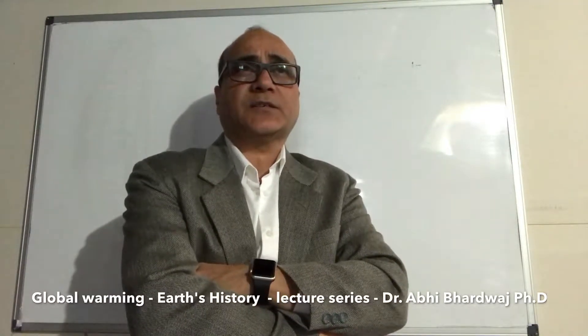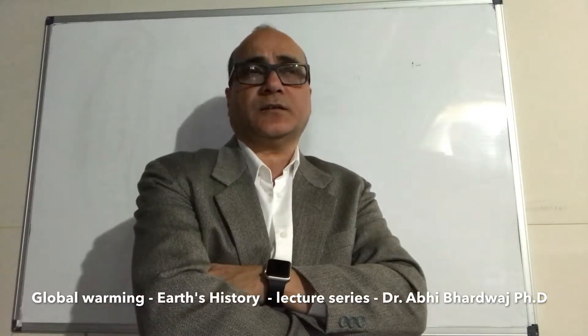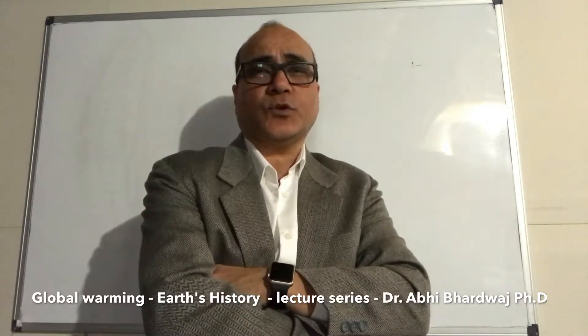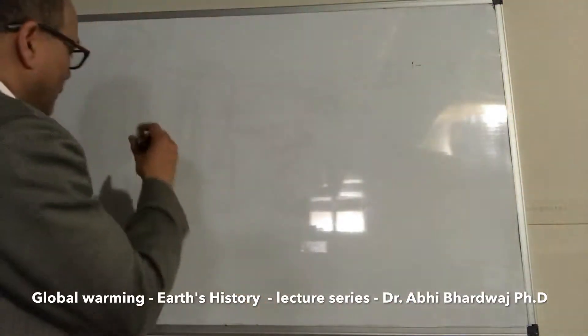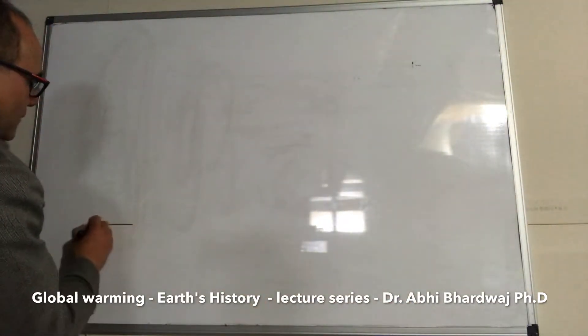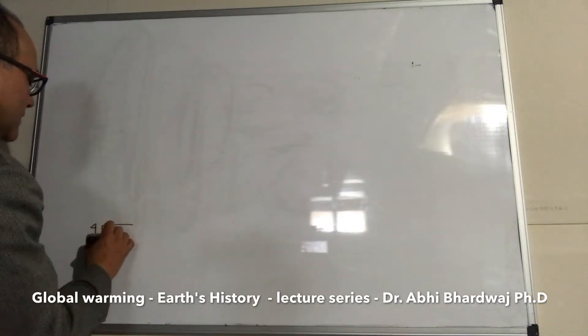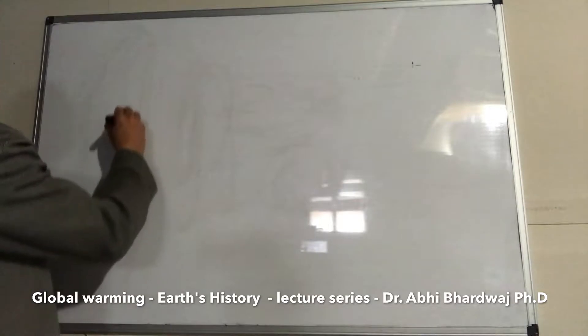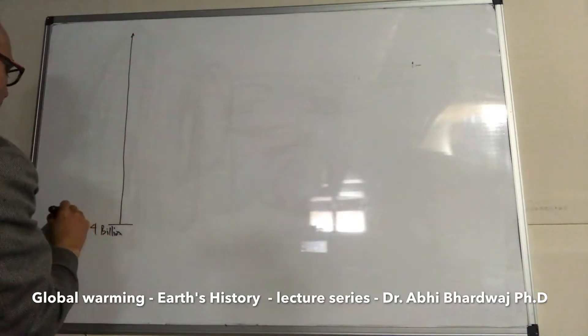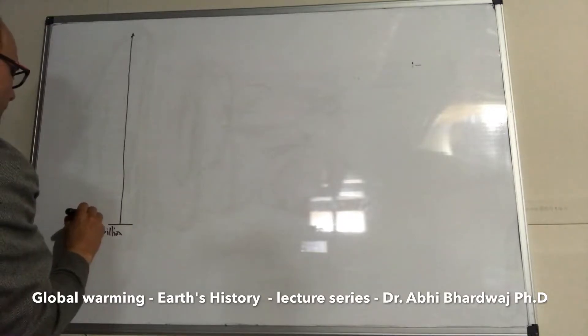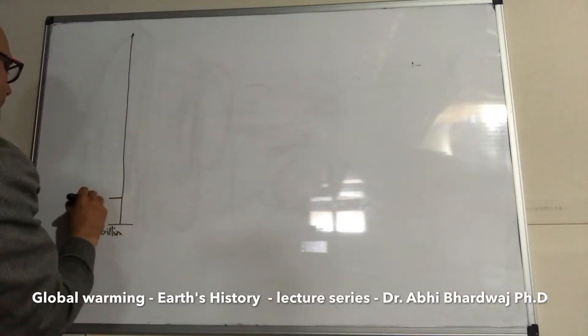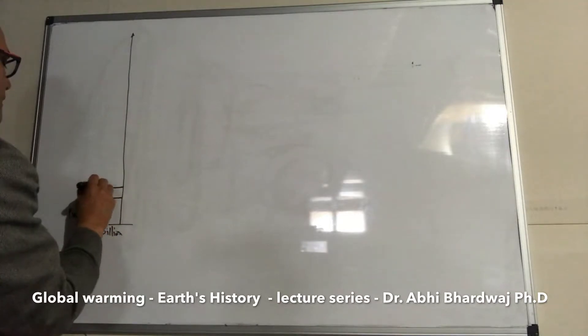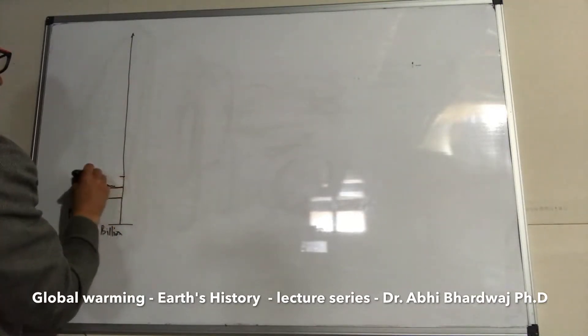My basic discussion will be on going back in time and seeing the different time periods of our planet Earth, focusing on particular ones. The Earth was formed around four billion years back. The first period is called Precambrian, and then you have Cambrian, Ordovician, and Silurian.